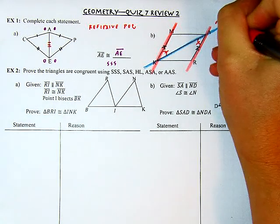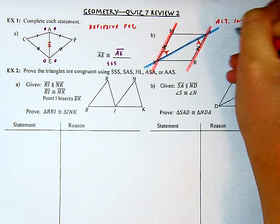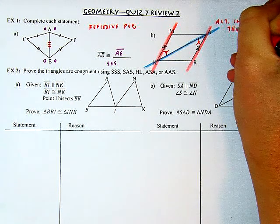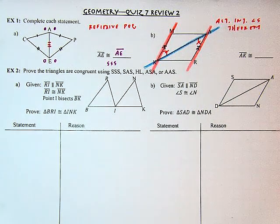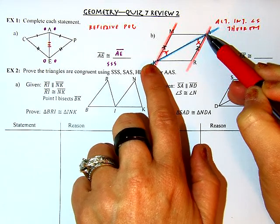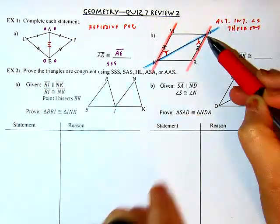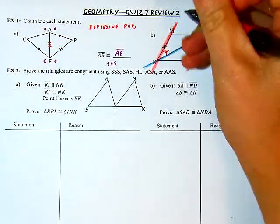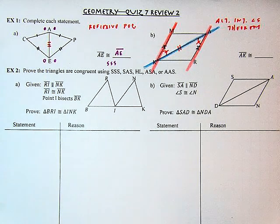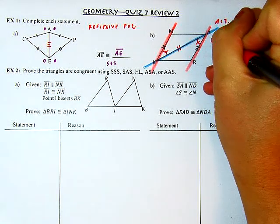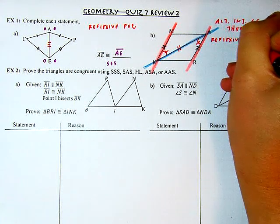If I was citing this as a reason in a proof, I would say the alternate interior angles theorem. And then I see that shared side again — it's the same side for the triangle on top and the triangle on the bottom, so I'll give it a double tick mark. If I was writing this in a proof, my reason would be the reflexive property of congruence.